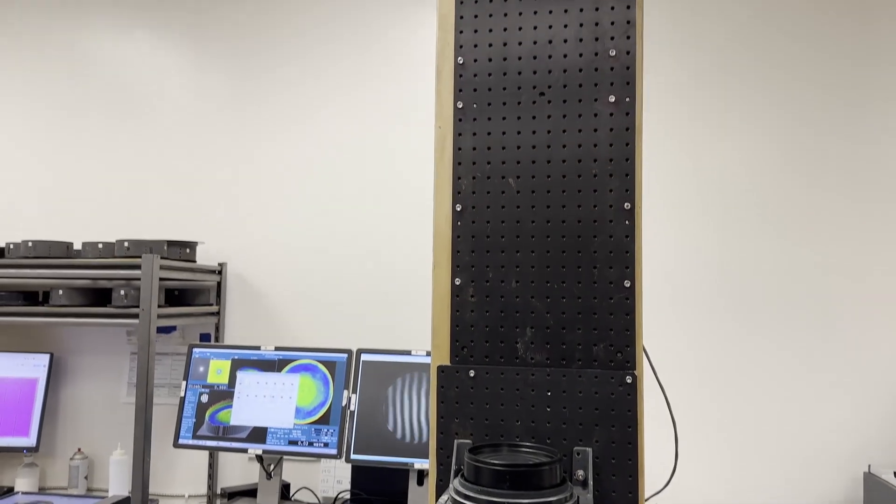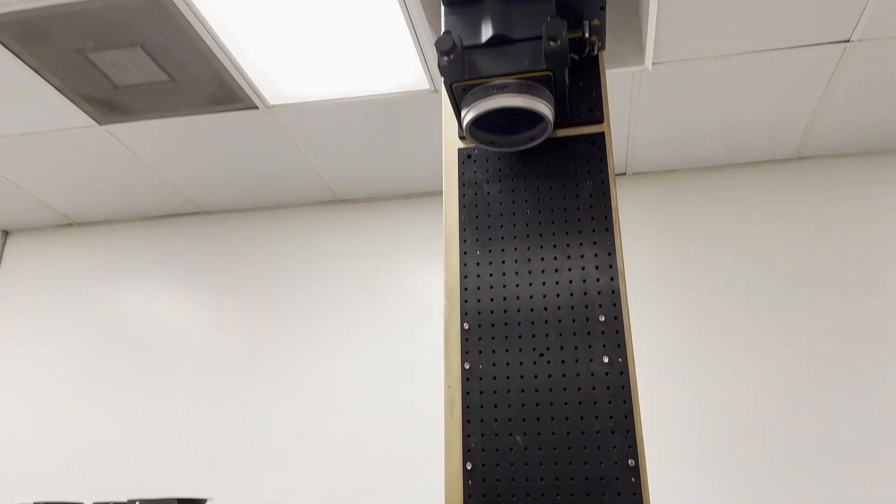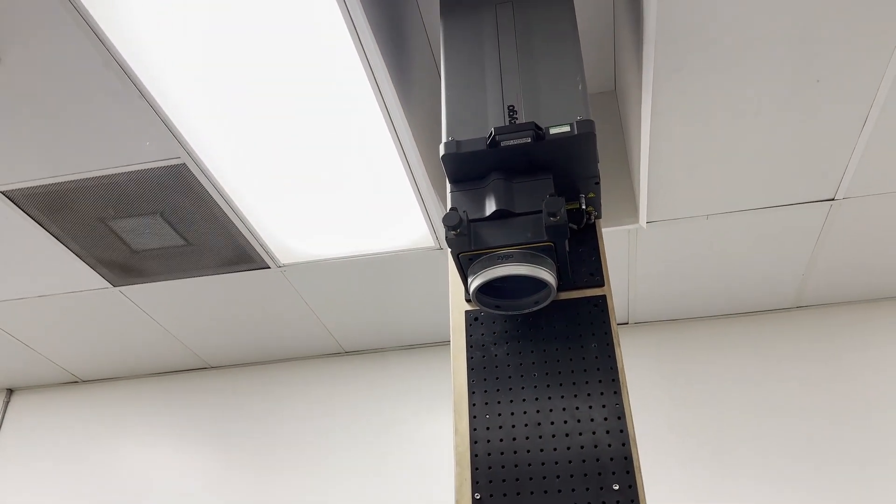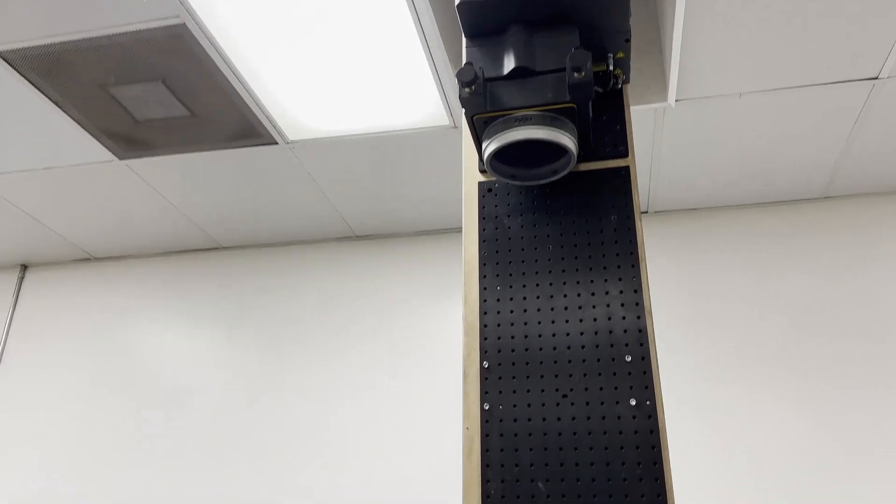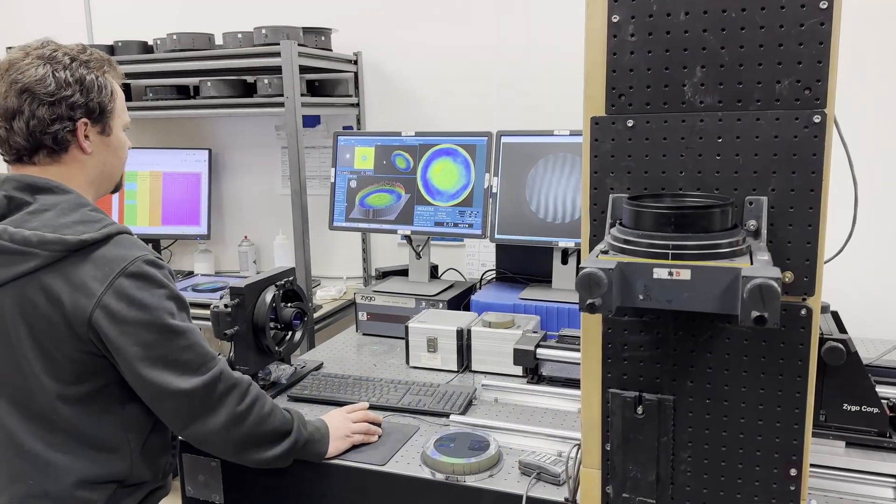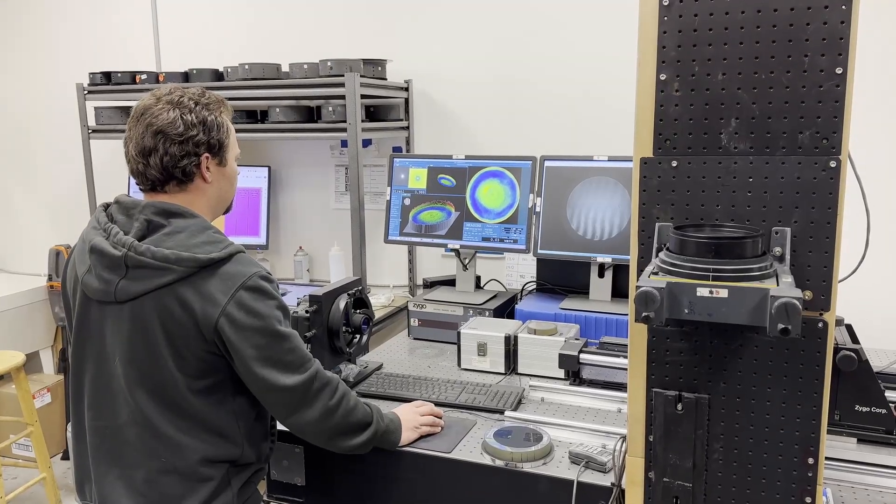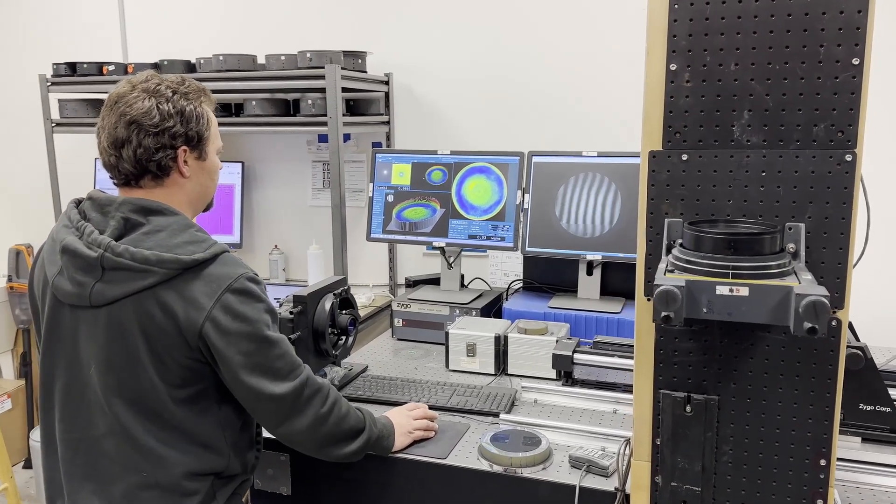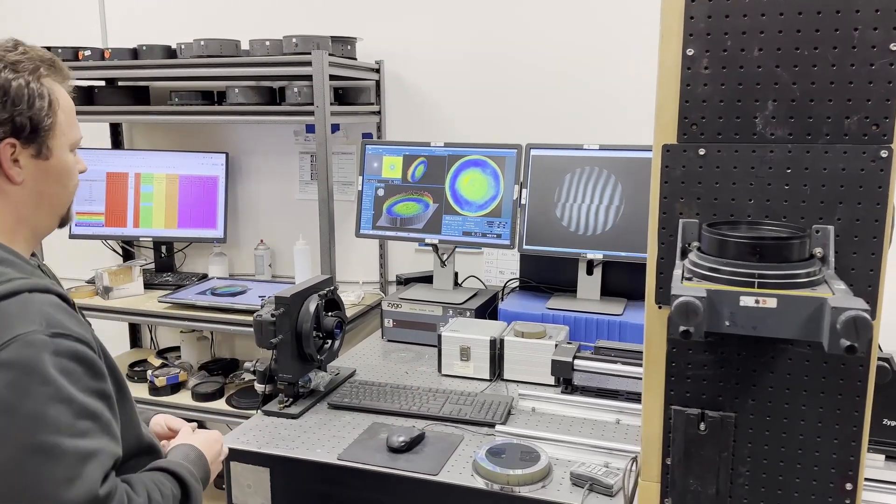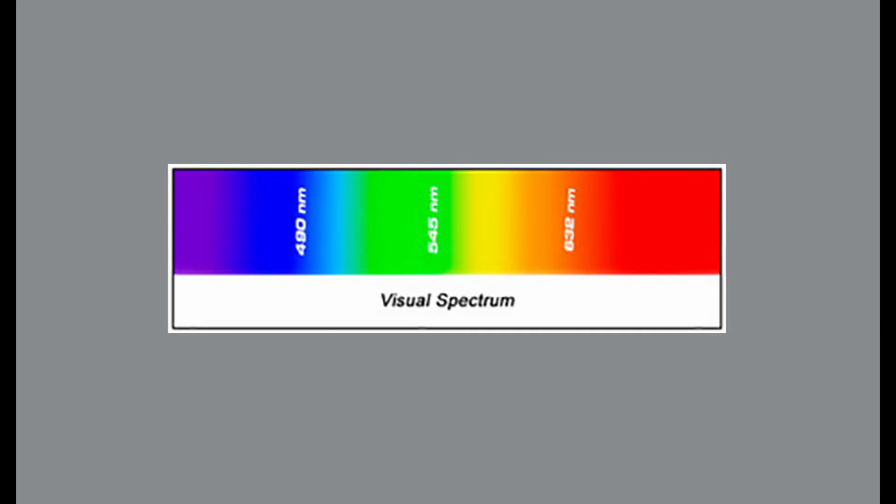The Zygo Interferometer uses a helium-neon laser so it tests in red light. When we're reducing aberrations that impact performance, it really doesn't matter what color is used since these defects are seen in all colors. But once all the aberrations are reduced, we perform additional figuring sessions to move the center of the optical correction towards the middle of the visual spectrum.